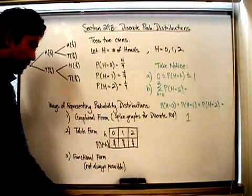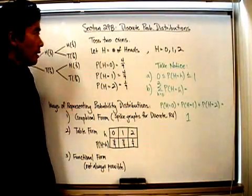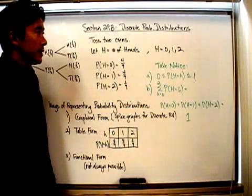Let's take a look at section 29B, which is called discrete probability distributions.